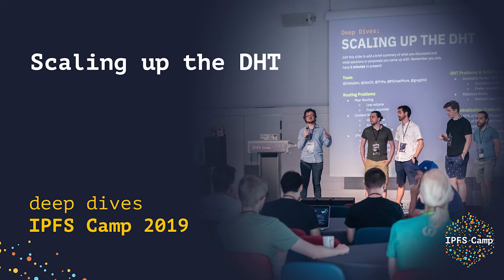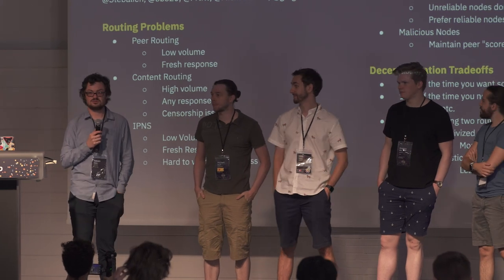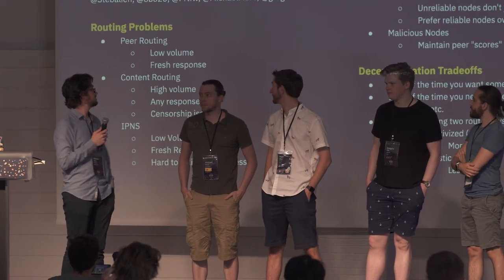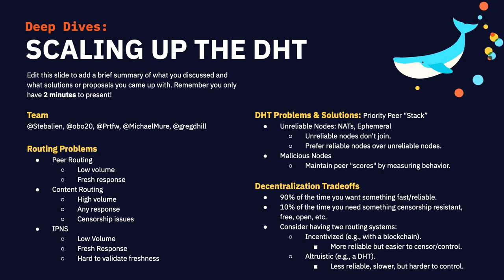We discussed how to scale up the DHT. The three problems the DHT currently solves for IPFS are: peer routing — how do you find a specific peer on the network; content routing — how do you find who has the content you're looking for; and IPNS — what is the latest file or object associated with some mutable name.